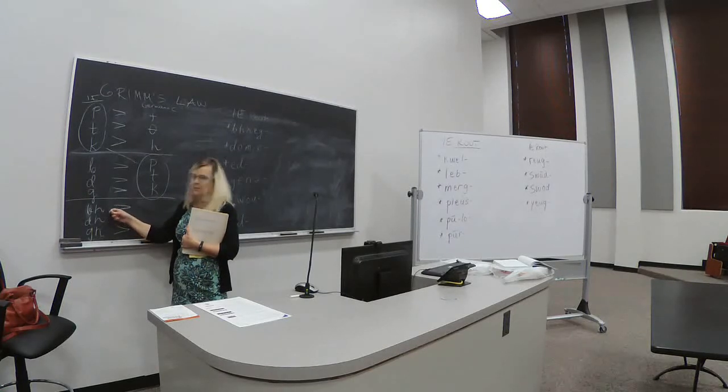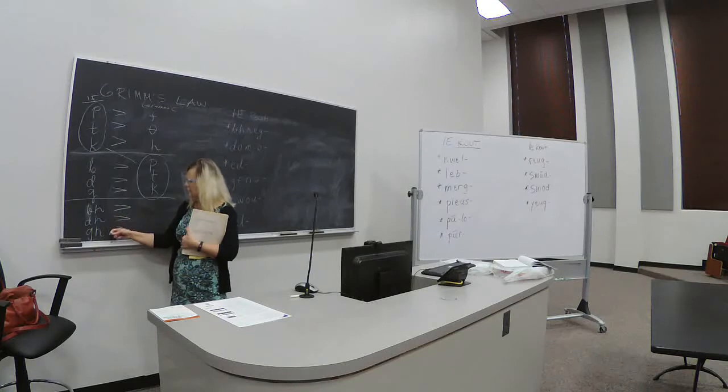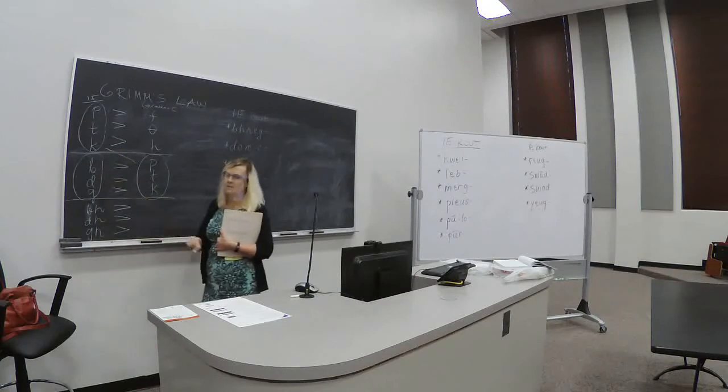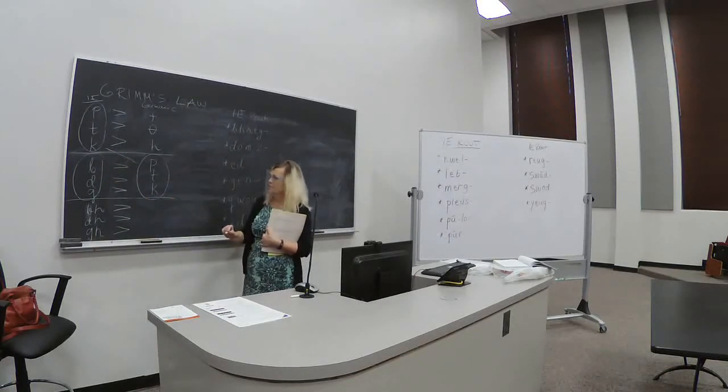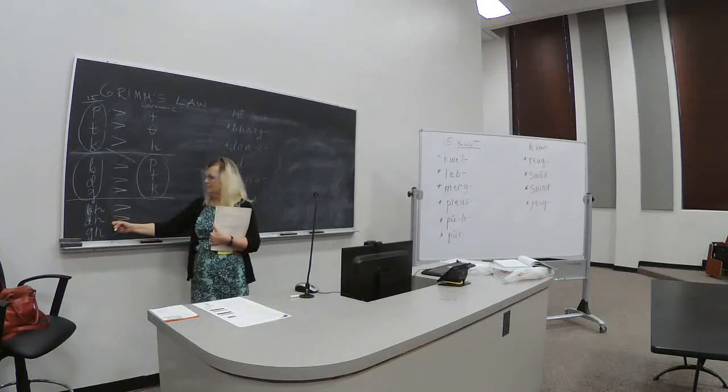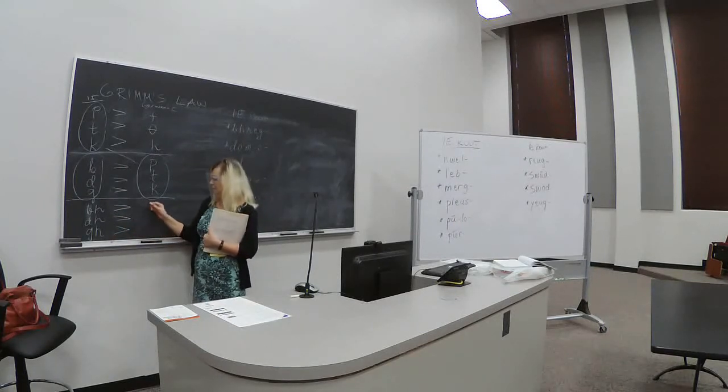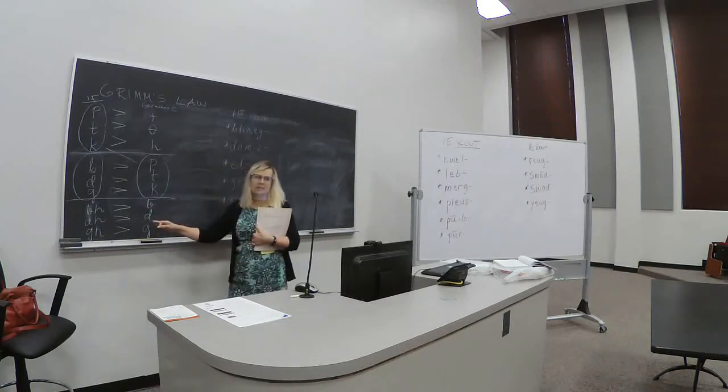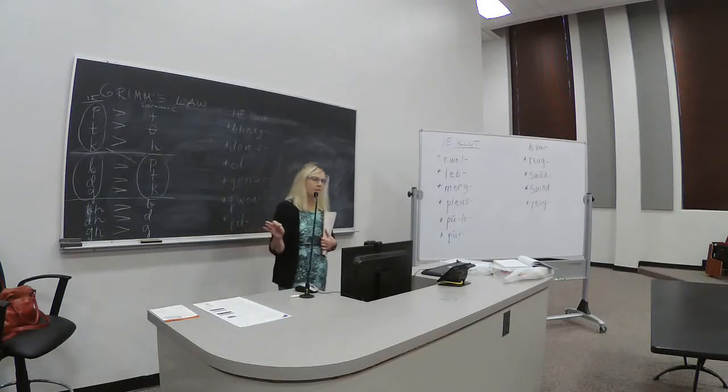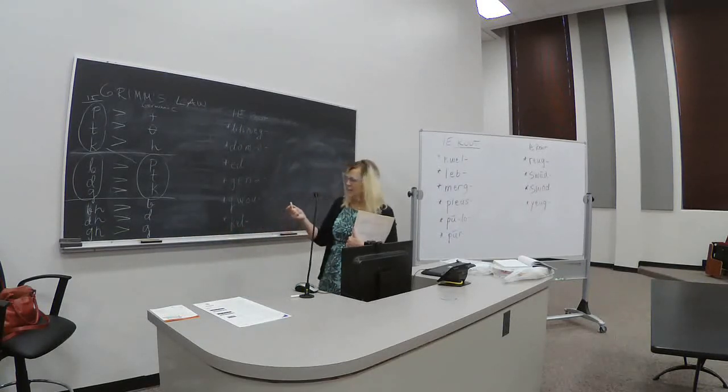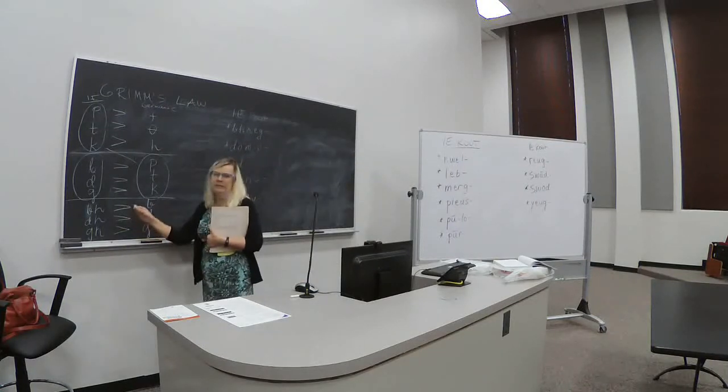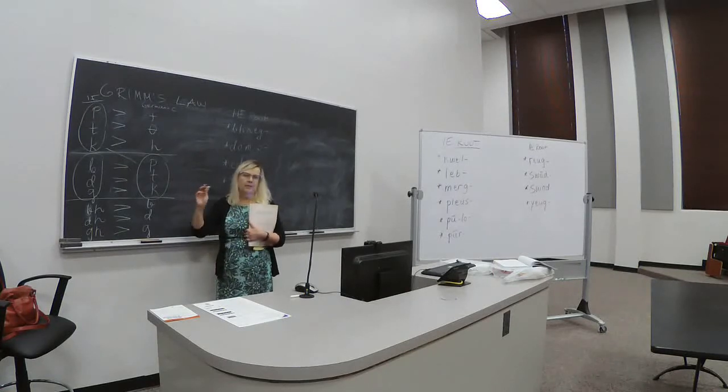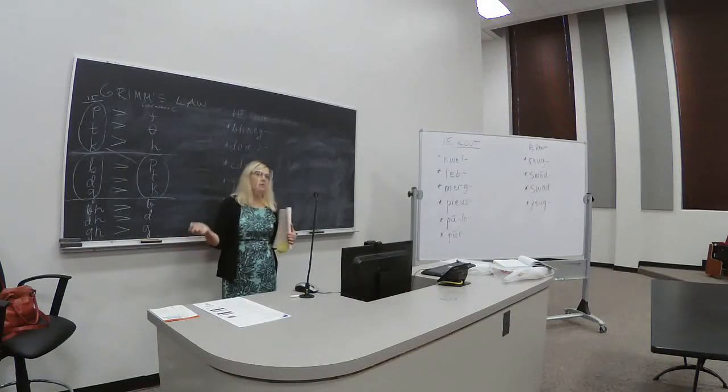In Germanic these kind of left empty spaces. So what happened next? B, D, and G became exactly P, T, and K. So they in a sense took their place. And the next chain reaction then, because Indo-European had the set of aspirated stops, voiced aspirated stops Bʰ, Dʰ, and Gʰ.